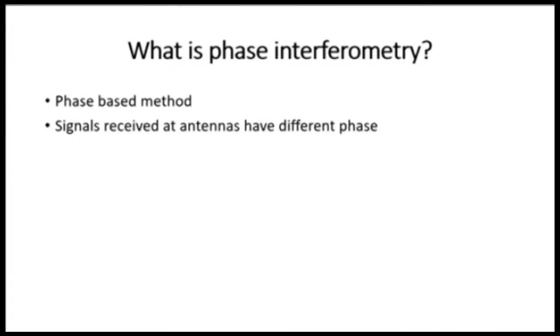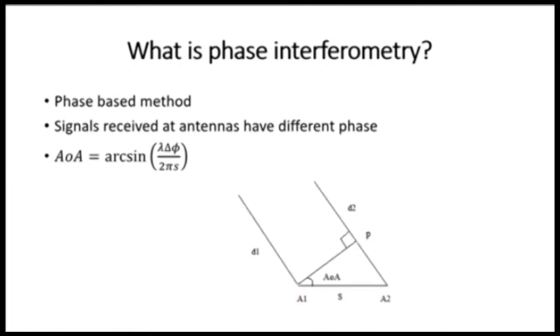So, what is phase interferometry? Phase interferometry is a phase-based method that is based on the principle that a signal from the same source will arrive at one antenna with a phase different to another antenna. A right-angle triangle can be formed from the emitter to the two antennas, and using trigonometry, an expression can be derived to calculate the angle of arrival.